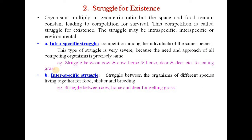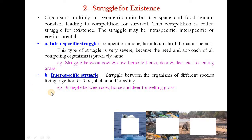The second type of struggle is interspecific struggle — struggle between organisms of different species living together for food, shelter, and breeding. An example is the struggle between cow, horse, and deer for getting the grass.